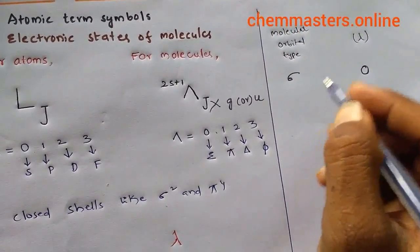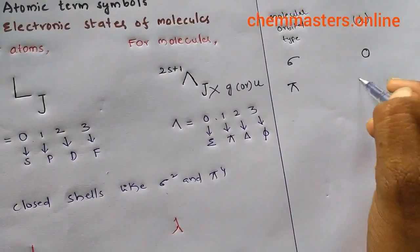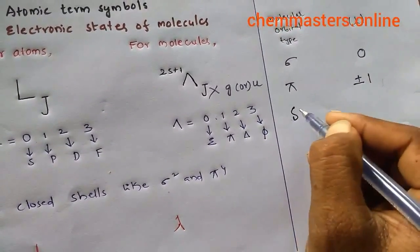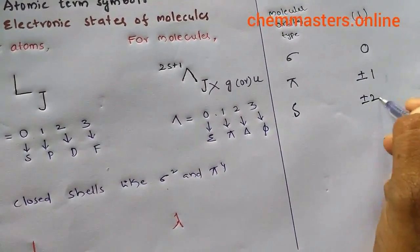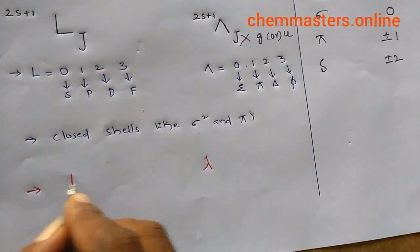If Pi orbital type is there, then we can take lambda equals to plus or minus one. If Delta is there, we can take plus or minus two.